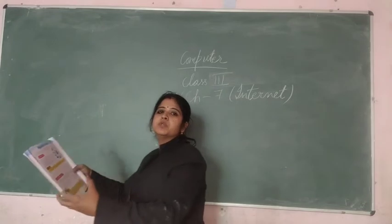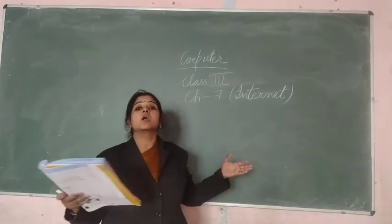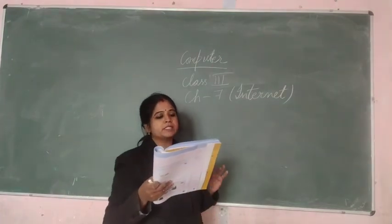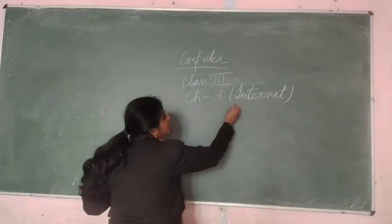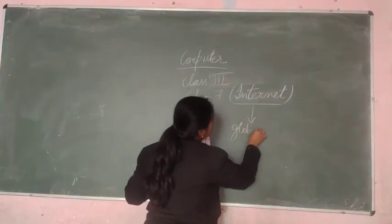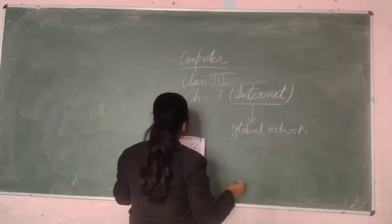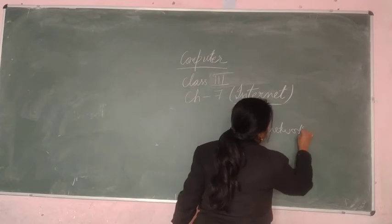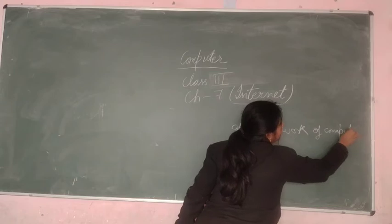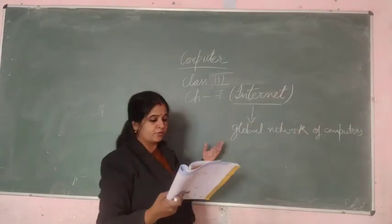It means it is connected between millions of computers across the world, around the world it is available. The internet is a global network — internet is a global network of computers. That is the simple definition, and it is correct.